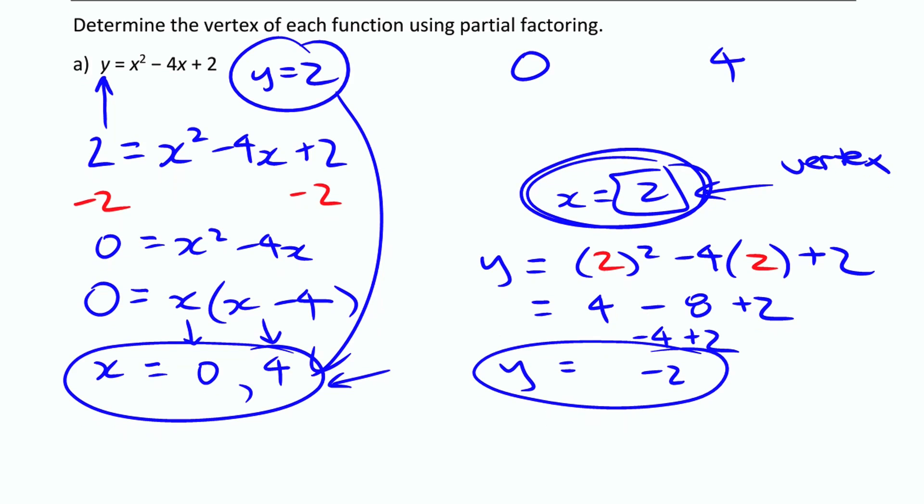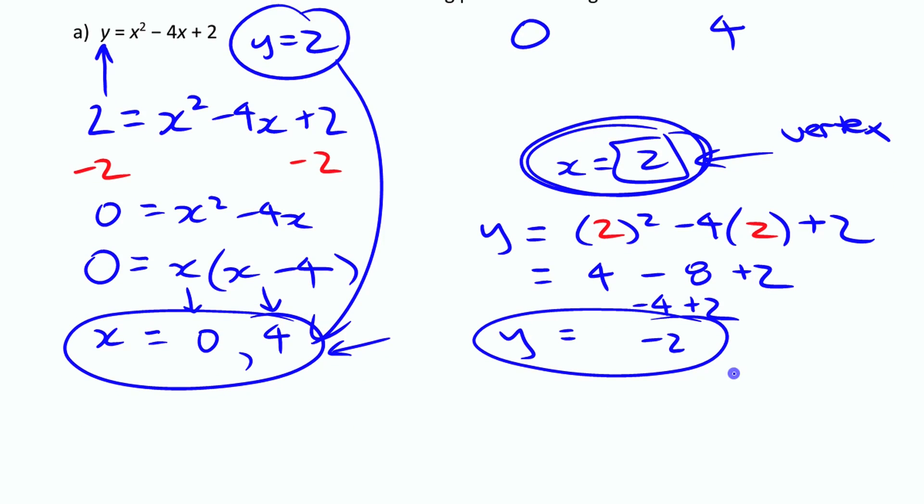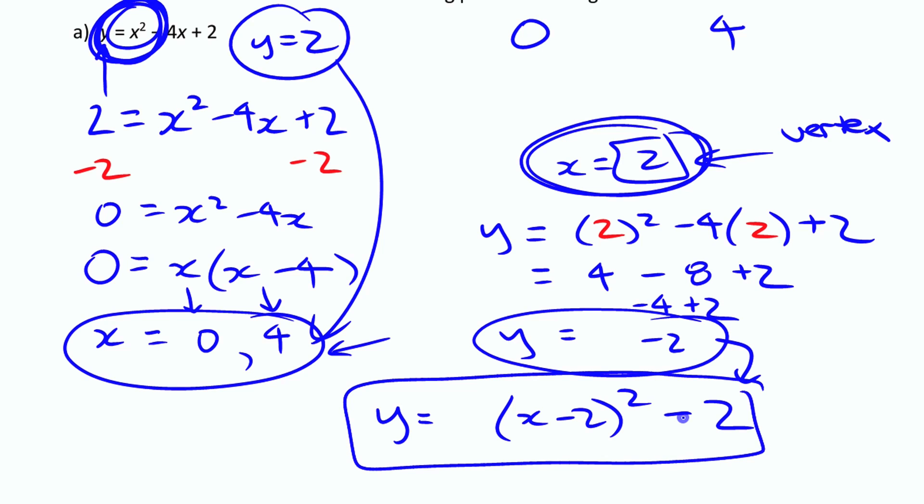And then I can write it in vertex form. If I know that the vertex is x is 2, this is going to be x minus 2 in my vertex form. I'm going to have minus 2 outside there. And then the a value is just the same as what it was. So it's just a 1, which I don't even have to write. That's the vertex form. Let's try another one here.